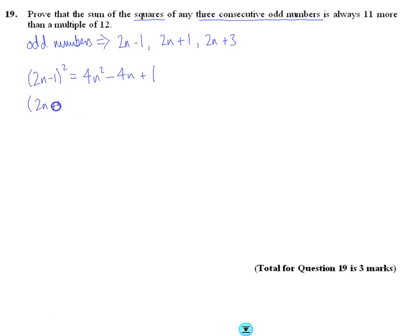2n plus 1 squared, so I'm just squaring each odd number, gives me 4n squared plus 4n plus 1. 4n squared plus 12n plus 9 for 2n plus 3 squared.